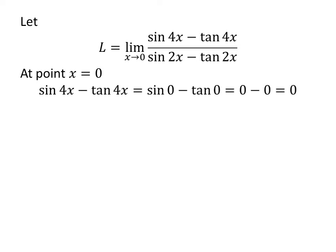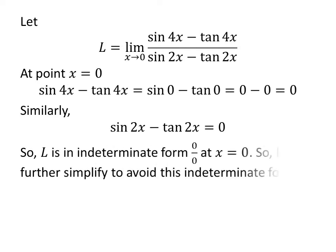At point x is equal to 0, the numerator sine of 4 times x minus tangent of 4 times x is equal to 0, and the denominator is also equal to 0. So we can see that the limit L is in indeterminate form 0 upon 0. Let us try to further simplify the limit to avoid this indeterminate form.